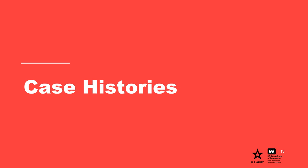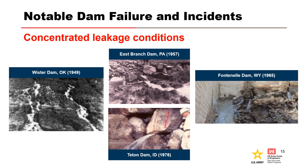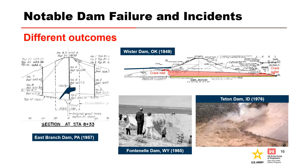Incidents and failure case histories provide insights to use when evaluating an existing dam or levee. The foundation conditions for four key dam failure incidents from USACE and Reclamation are shown. Often, the devil is in the details with respect to foundation treatment and defensive measures. This slide shows the concentrated leakage that occurred at these dams over a 40-year period between 1949 and 1989. Only Teton Dam failed; the others were near misses or major incidents.